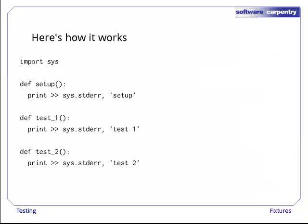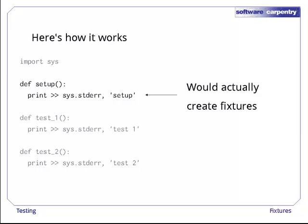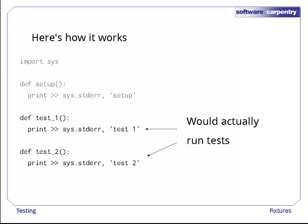Here's an example showing how it works. If we were actually testing, setup would define the fixtures our tests use, but we'll have it print to standard error so that we can see when it runs. Similarly, test_1 and test_2 would use those fixtures to do some testing, but we'll have them print as well, and in real tests would give them better names.